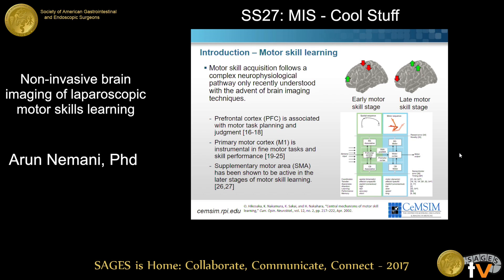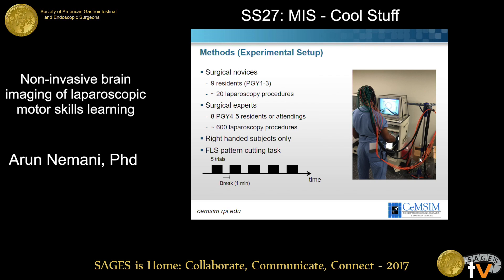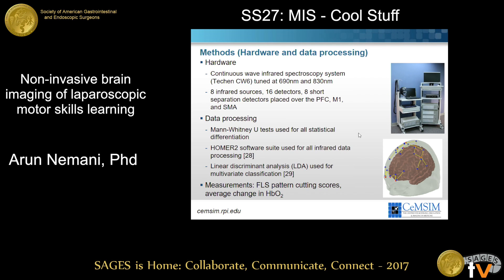There are three goals for this study. First, can we use functional near-infrared spectroscopy, fNIRS for short, to objectively differentiate surgical motor skills in real time? Second, can we use it to classify expert and novice groups? And finally, is this a better approach — more accurate than established metrics? To do this, we recruited residents from both novice and expert groups with varying degrees of laparoscopic experience. To ensure data is not biased for handedness, everybody is right-handed. We asked them all to perform five pattern-cutting tasks with trials in between.